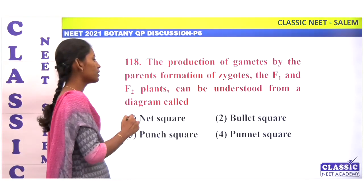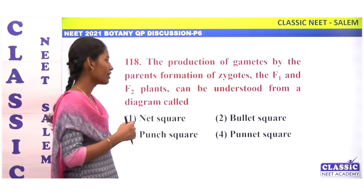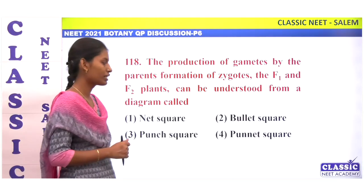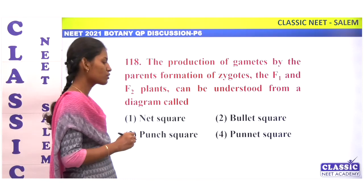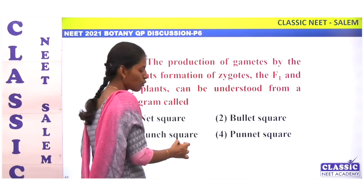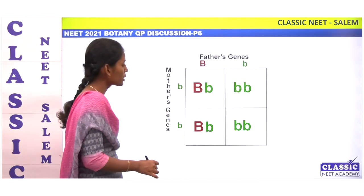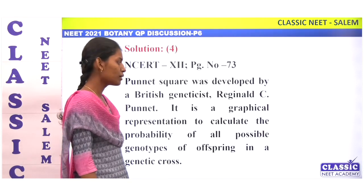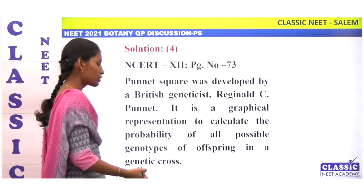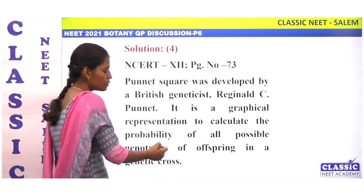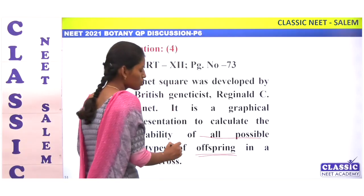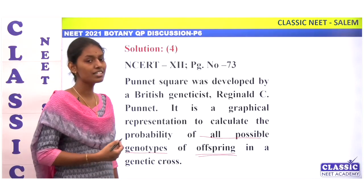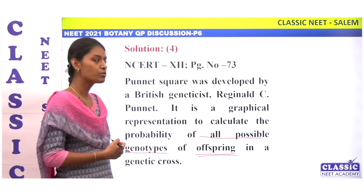The production of gametes by parents, formation of zygote, and F1, F2 plants can be understood from a diagram called what? Options: net square, blood square, pen square, and Punnett square. The correct answer is Punnett square — a diagrammatic representation helpful to calculate all possible genotypes of offspring. Option 4.